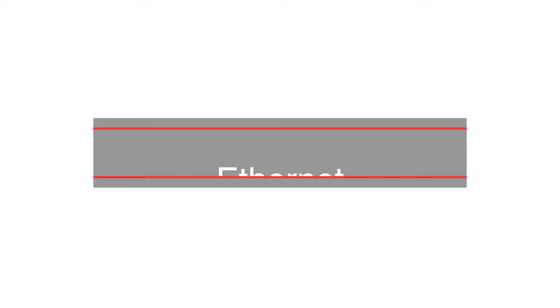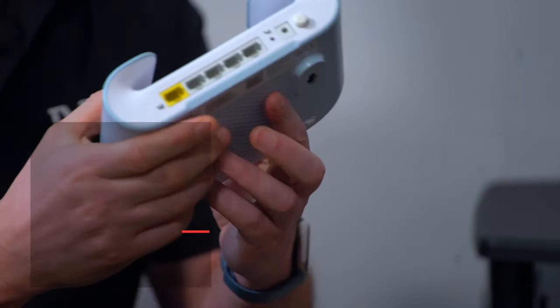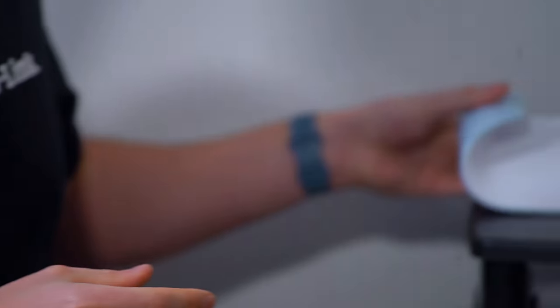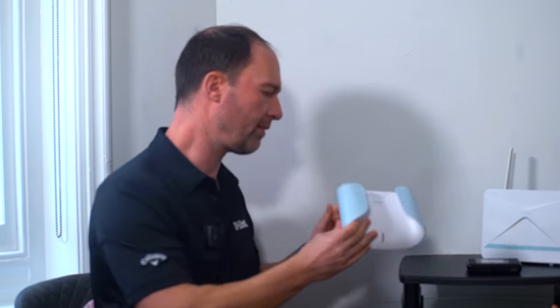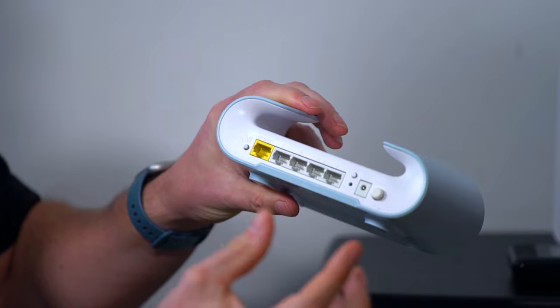The second term is Ethernet. Ethernet is simply the standard of connection used when you use a wired connection. If you have a separate modem and router, you'll have a wired Ethernet connection from your modem into the Ethernet port on the back of your router, and then Ethernet connections coming out to your various devices.